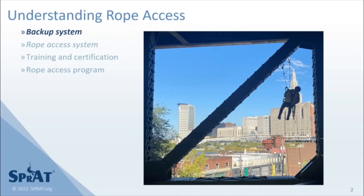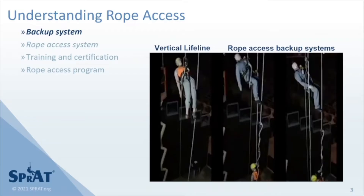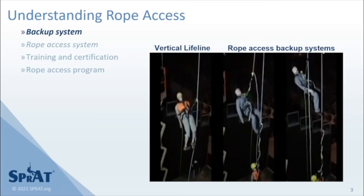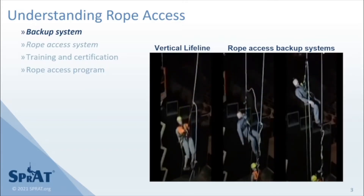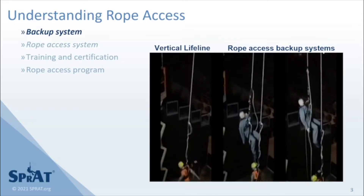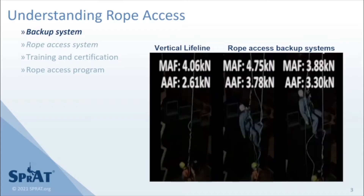If you were offered the choice between accidentally falling or not, what would you choose? What if the choice was between accidentally falling a greater or a lesser distance? In the video, three drop tests are shown. The mannequin on the left is being dropped onto a vertical lifeline system, compliant with most fall protection standards and regulations. In the two drops on the right, the mannequins are being dropped onto backup systems as used in rope access. If you had to fall onto one of these systems, which would you choose?